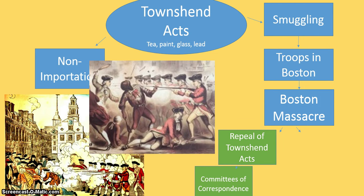Eventually the Townshend Acts are repealed, and we get the committees of correspondence. Each town started to create a committee — it was correspondence, spreading the news, getting the word out, maybe telling other colonies what happened in Boston: these people were shot, blood has been shed, or we're going to boycott this or that, or there are more troops here and there. The colonies are now really starting to communicate.